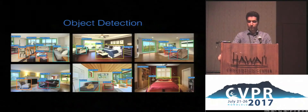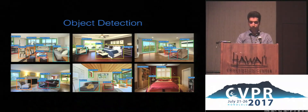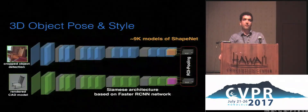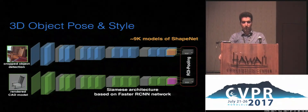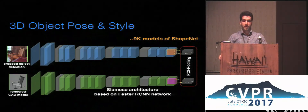For object detection, we use Faster RCNN trained on indoor object categories of the large-scale ImageNet and LSUN dataset. We then render around 9K 3D CAD models from ShapeNet with different azimuth and elevation, and use the RA pooling layer of our trained network in a CMU architecture to find the best matching object pose and style from ShapeNet.